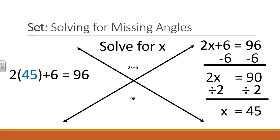To check our answer, let's substitute 45 back into the original equation. And 2 times 45 is 90 plus 6 equals 96.